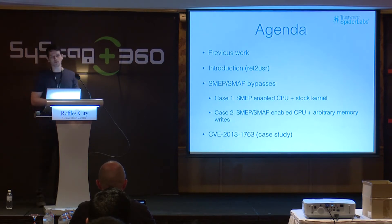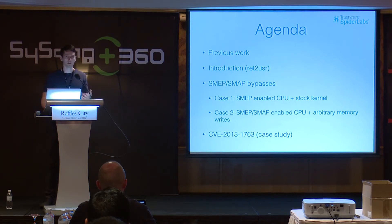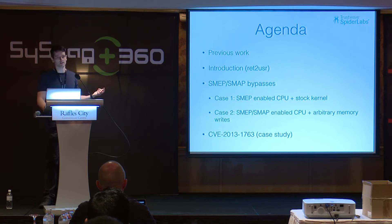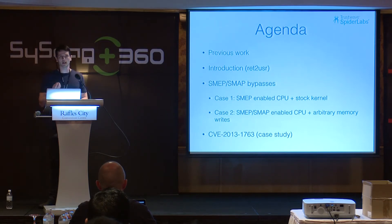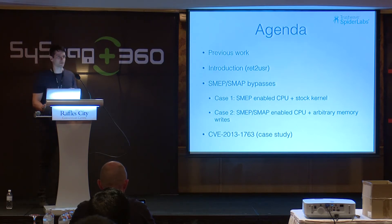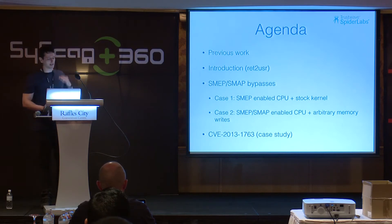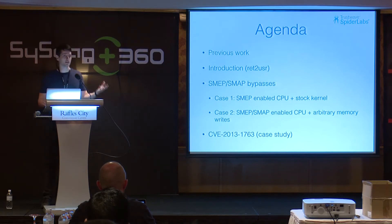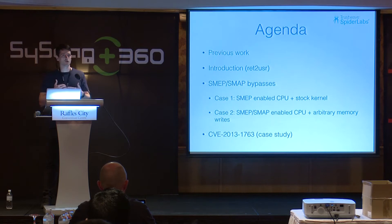The agenda for this talk: I'll cover previous work briefly, then start with the introduction and typical return-to-user attacks — how kernel exploits work on Linux. Then we'll talk about SMEP and SMEP bypasses. We'll consider two cases: first, when you have a SMEP-enabled CPU with a stock kernel; second, when you have SMEP and SMAP and arbitrary memory writes, which is a stronger assumption but doesn't require a stock kernel. The second part takes an existing CVE and converts that existing exploit to one that bypasses SMEP, and you'll see the modifications required are minimal.